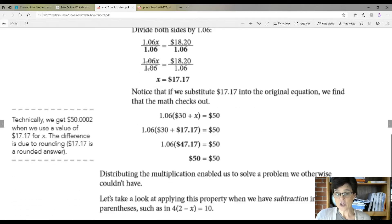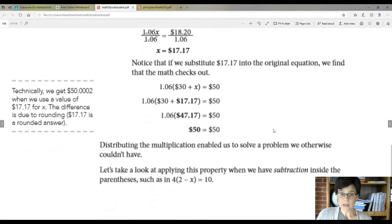Technically, you get $50.0002 when you use a value of $17.17. In other words, if you plug this number back in and you check it, your answer would be $50.0002. But the difference is rounding. Because when you pay money, we don't go, we don't do this. That's why they just rounded to $50. So distributing the multiplication enabled us to solve the problem we otherwise couldn't have.